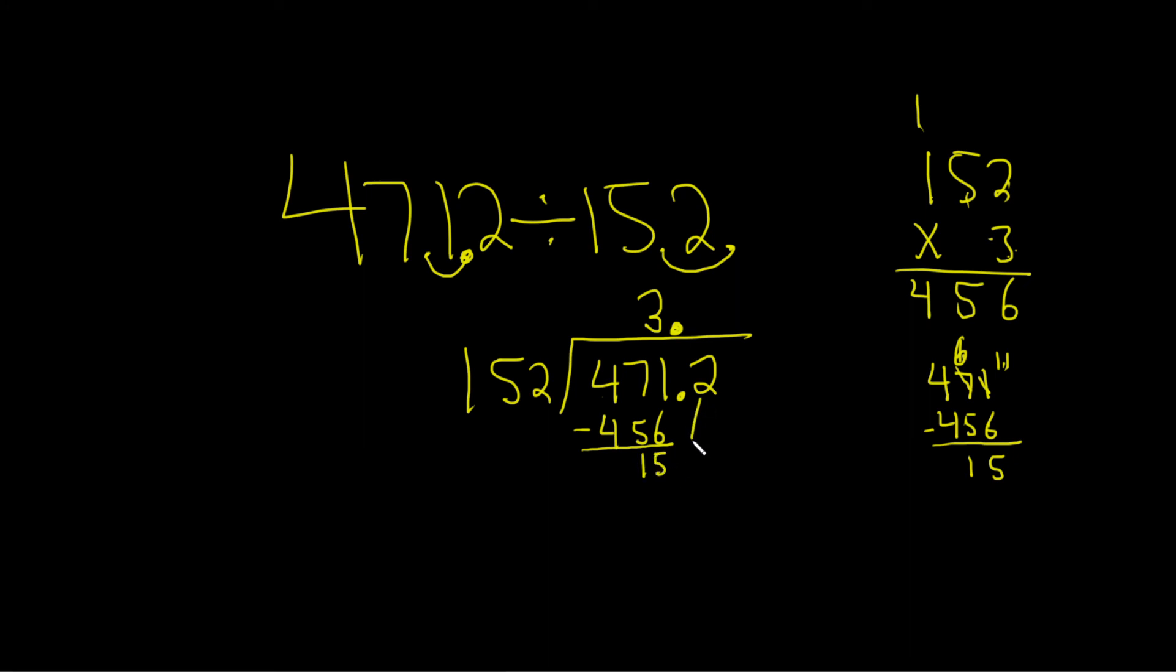Oh, it's so nice. Look at this. Now we bring down the 2. And we ask the question again. How many times does 152 go into 152? One time. 1 times 152 is 152. You draw the line, subtract, and you get 0.